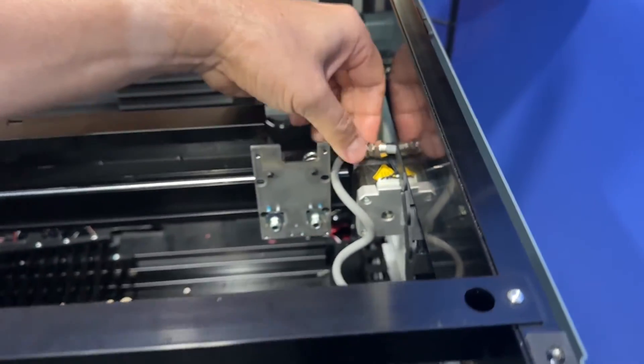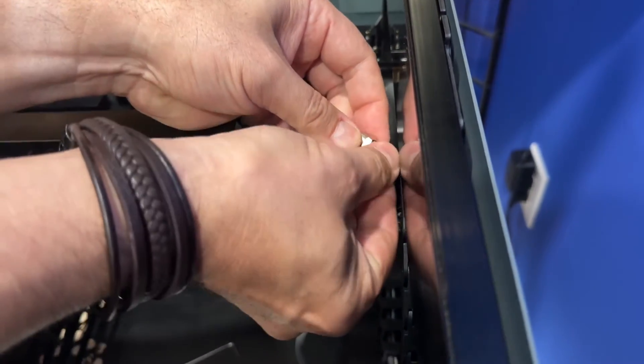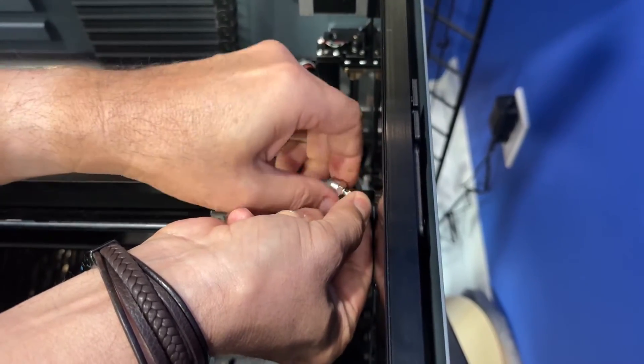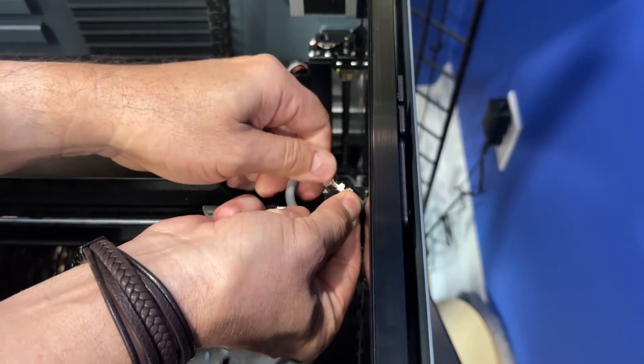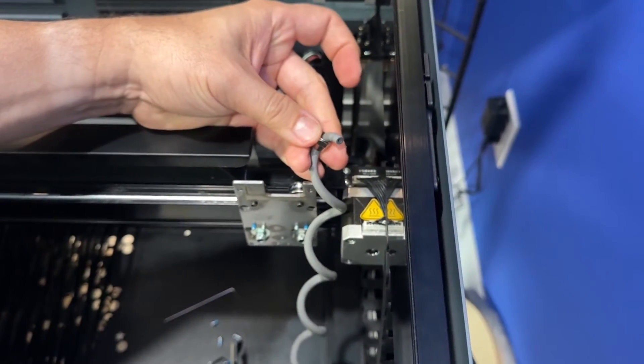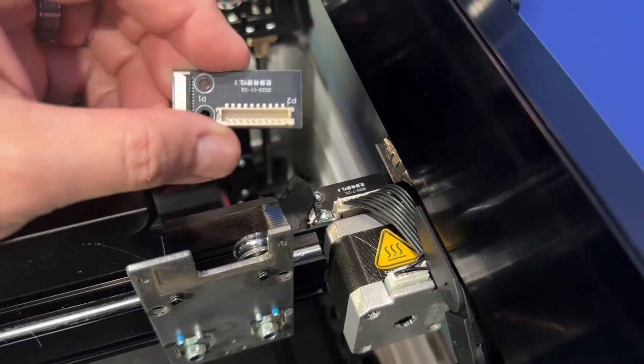Otherwise your air assist will shoot all over the place and it won't work real well. And then there's a little nut on here. Just loosen it off. Mine was pretty easy. I could do it with my fingers and you just pull that off. You won't need air assist. So turn that off in the software when you're working with your IR laser module. So you can just put that aside.